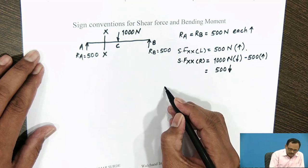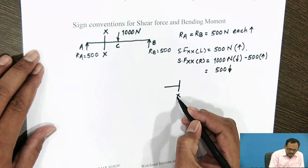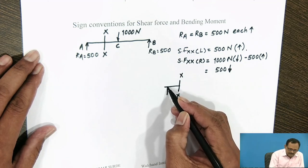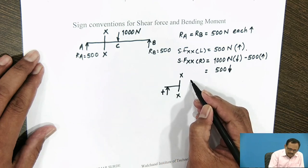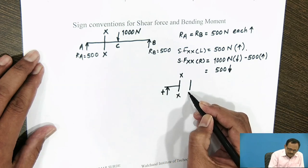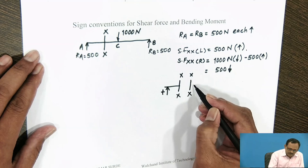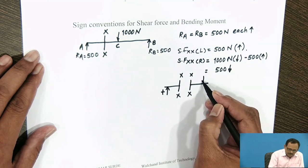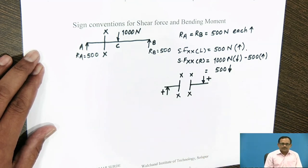If you are referring to the right side of the section, all downward forces are considered to be positive.